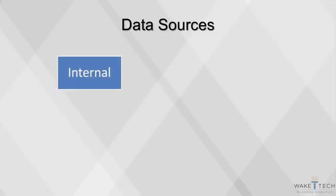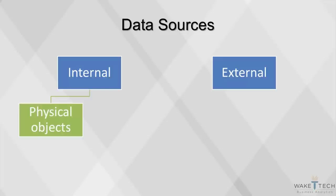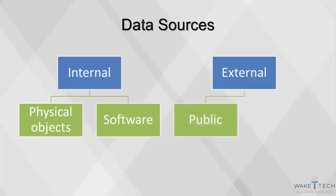Data can come from a variety of sources, both internal and external. Internal data is collected by businesses and stored within their own servers. This data can be generated by physical objects such as sensors or barcodes, or by using computer software such as websites. There are now many external data sources that businesses can use, such as public domain sources like government surveys or social media posts, and paid services like stock market or weather data. These external data sources can be combined with a company's proprietary data to build a more complete picture of reality.